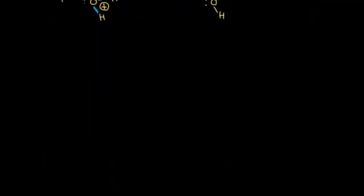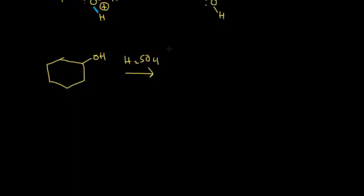Let's write the mechanism for an actual reaction using cyclohexanol. Drawing cyclohexanol and adding sulfuric acid dehydrates the molecule, losing water. The carbon bonded to OH is the alpha carbon. The carbons adjacent to the alpha carbon are the beta carbons—one on each side. Each of those beta carbons has two hydrogens, so any of those hydrogens can serve as the beta hydrogen that participates in the mechanism.